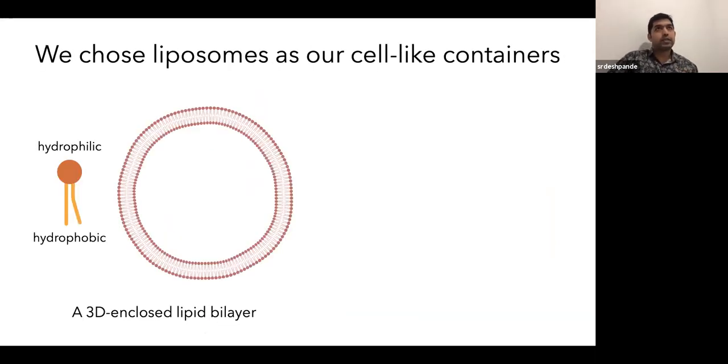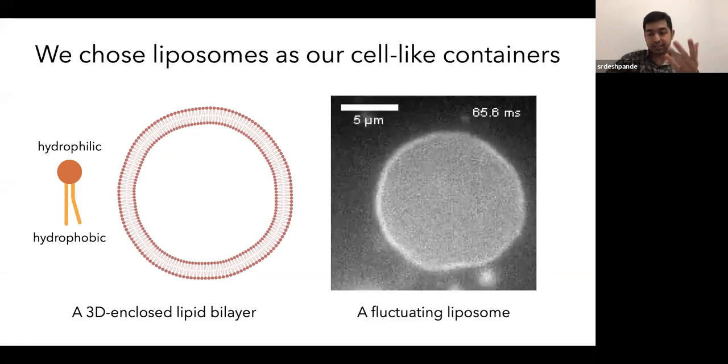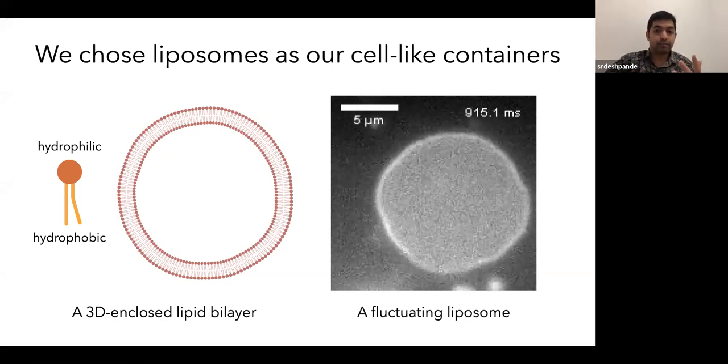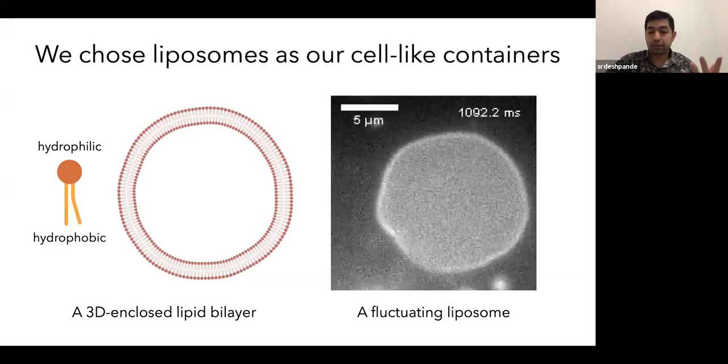So from different types of vesicles, we chose liposomes as our cell-like containers. Liposomes, the boundary of liposomes is made up of lipids, and lipids are amphiphilic molecules. That means they have a hydrophilic head and a hydrophobic two tails. And in an aqueous solution, they can self-assemble to form a three-dimensional enclosed lipid bilayer, which we call a liposome. And here is a nice video of a fluctuating liposome. And you can already see that the membrane is very flexible, even at room temperature.